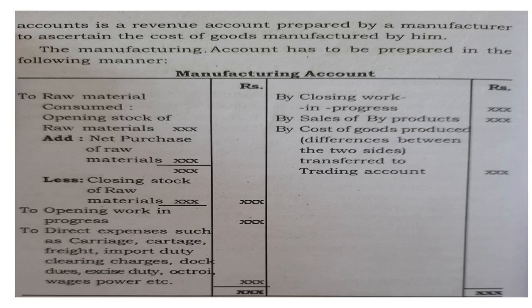The manufacturing account has to be prepared in the following manner. On the debit side, they enter raw material consumed — that is opening stock of raw material, add net purchases of raw material, less closing stock of raw material. Then opening work in progress, and direct expenses such as carriage, cartage, freight, import duty, clearing charges, dock dues, excise duty, octroi, wages, power, etc. On the credit side: closing work in progress, sale of by-product, and the cost of goods produced — that is, the difference between the two sides — is transferred to the trading account.